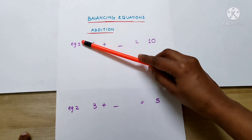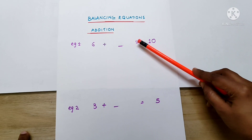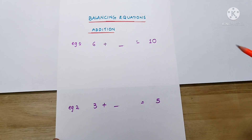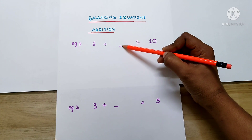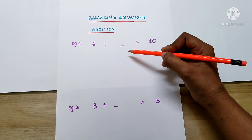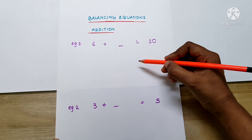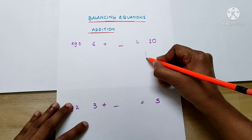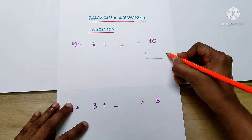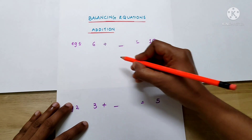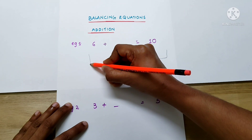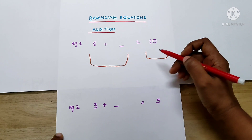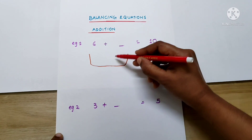Consider this example: 6 plus dash equals 10. Kids have to find the unknown number here. In order to solve this, first let's draw a basket on either side. We have drawn baskets on either side of the equation.